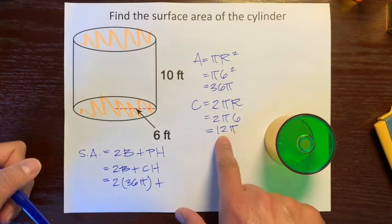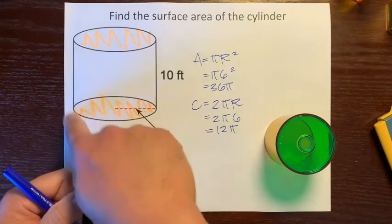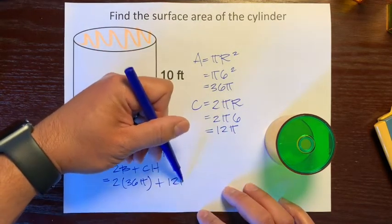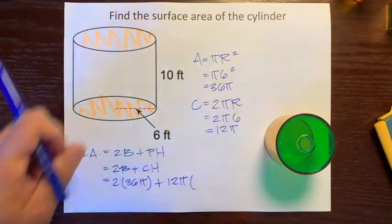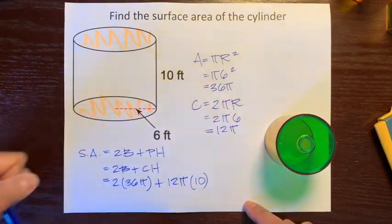Now we have that piece of information for our circumference, or the perimeter of the base. The base is a circle, so circumference, which is 12 pi times the distance between the two bases, which is 10.